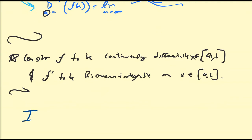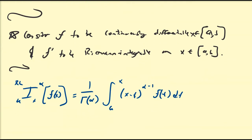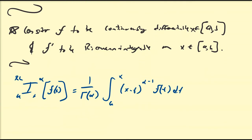The Riemann-Liouville fractional integral with base point a, x of order alpha of some function f of x is equal to 1 divided by gamma of alpha, multiplied by the integral from a to x of x minus t to the alpha minus 1, times f of t dt. The reason that we can't just replace alpha with a negative value is because the gamma function has asymptotic behavior around each of its poles at the negative integers, and does not behave well on the negative side of the real plane.